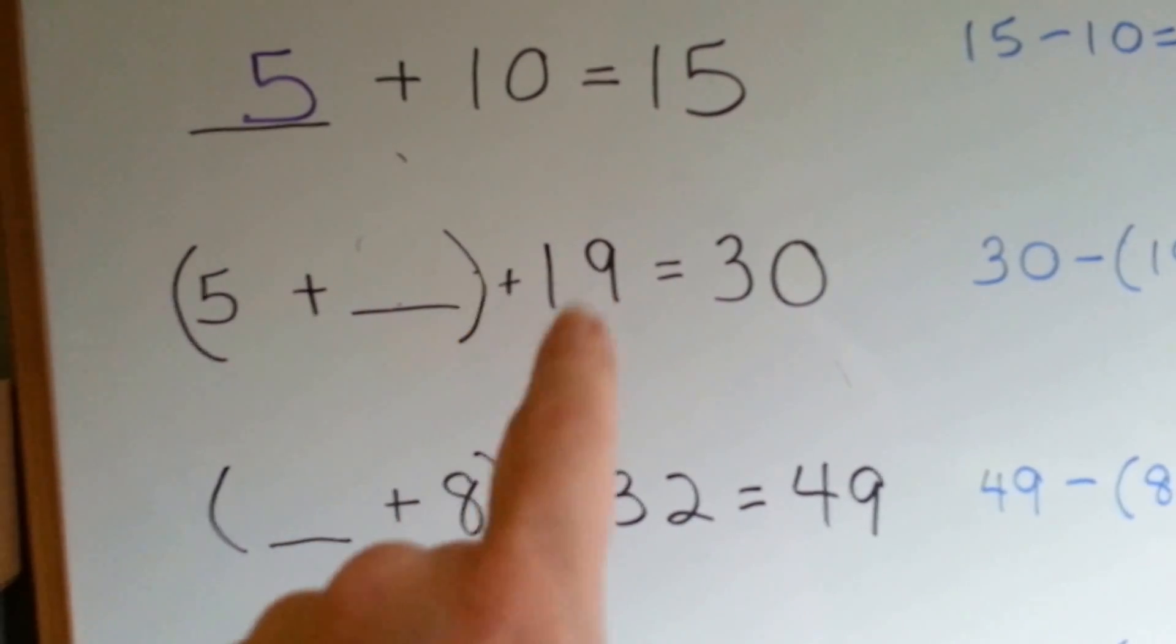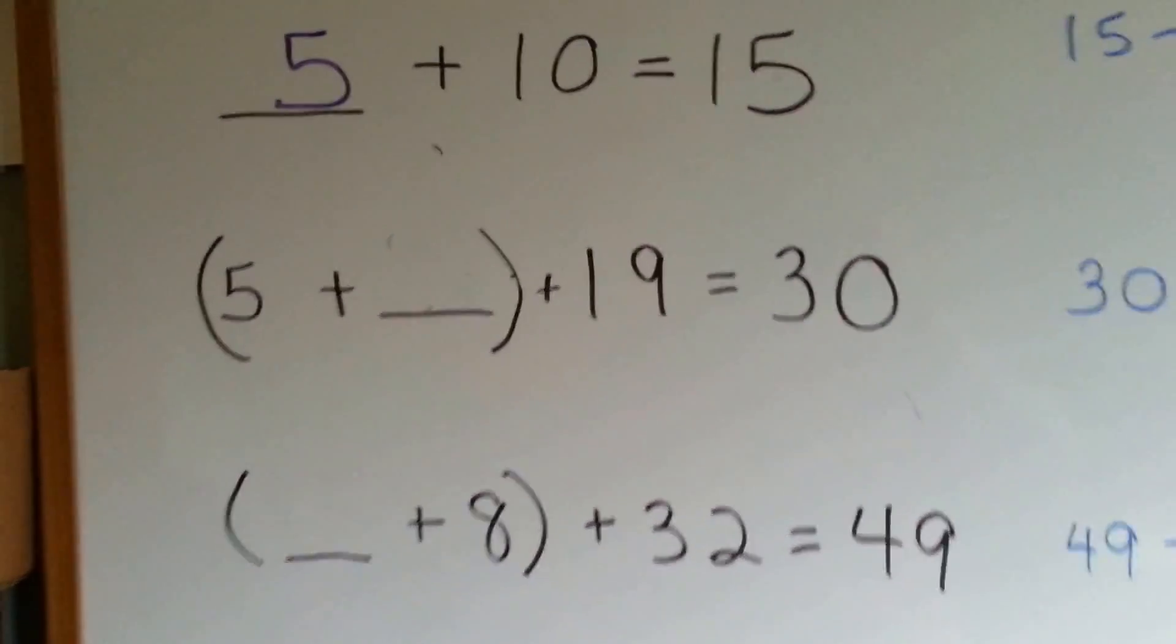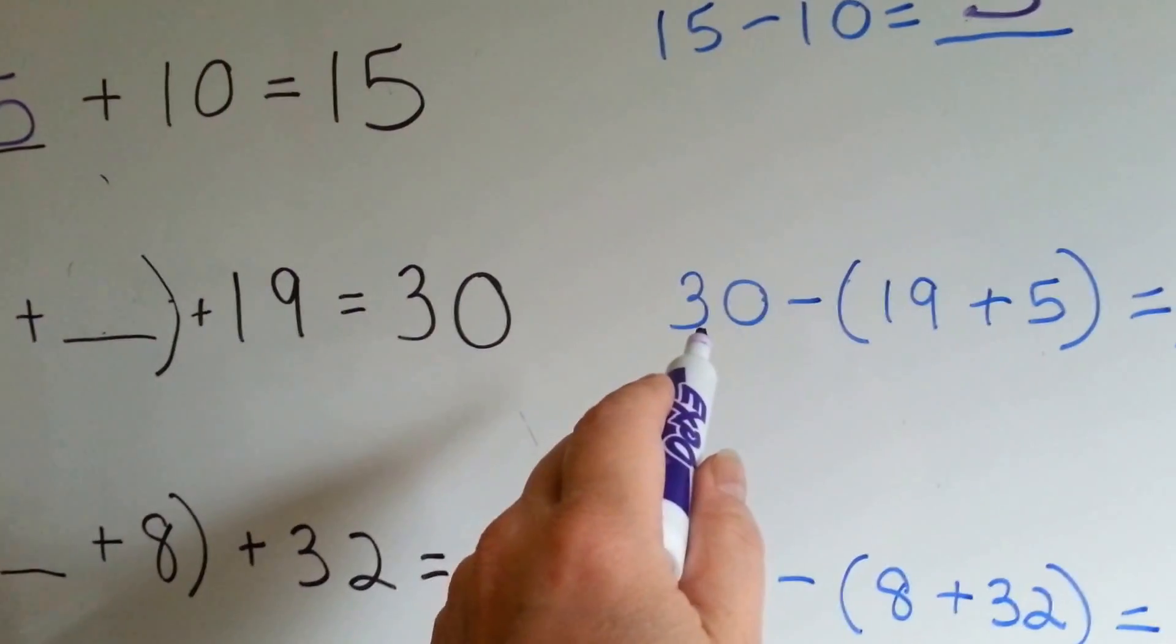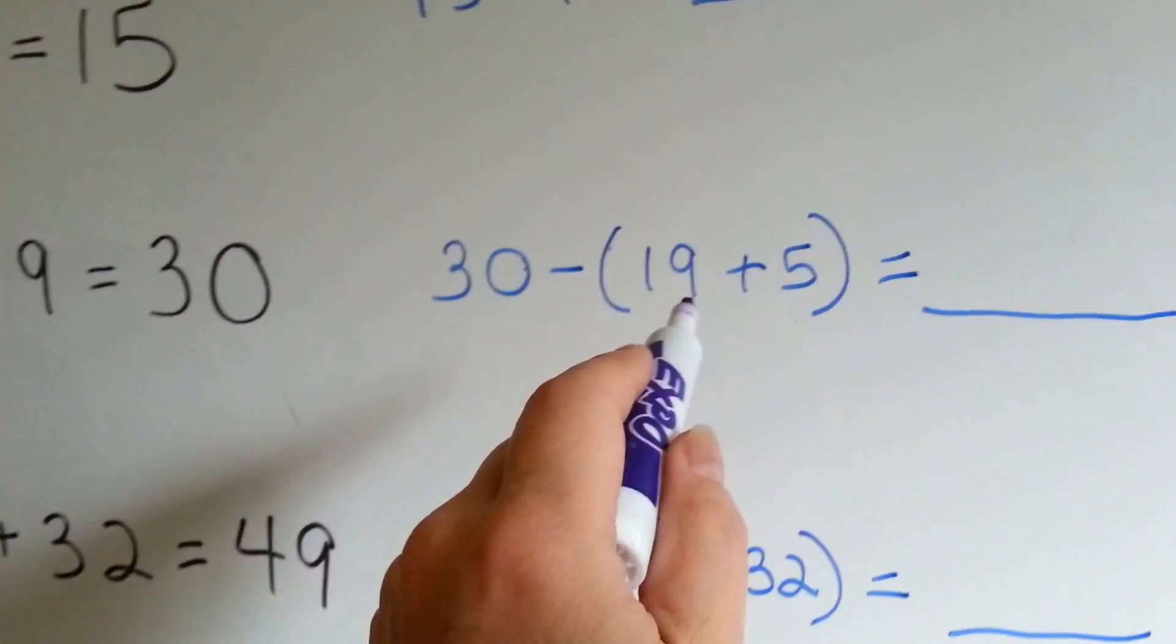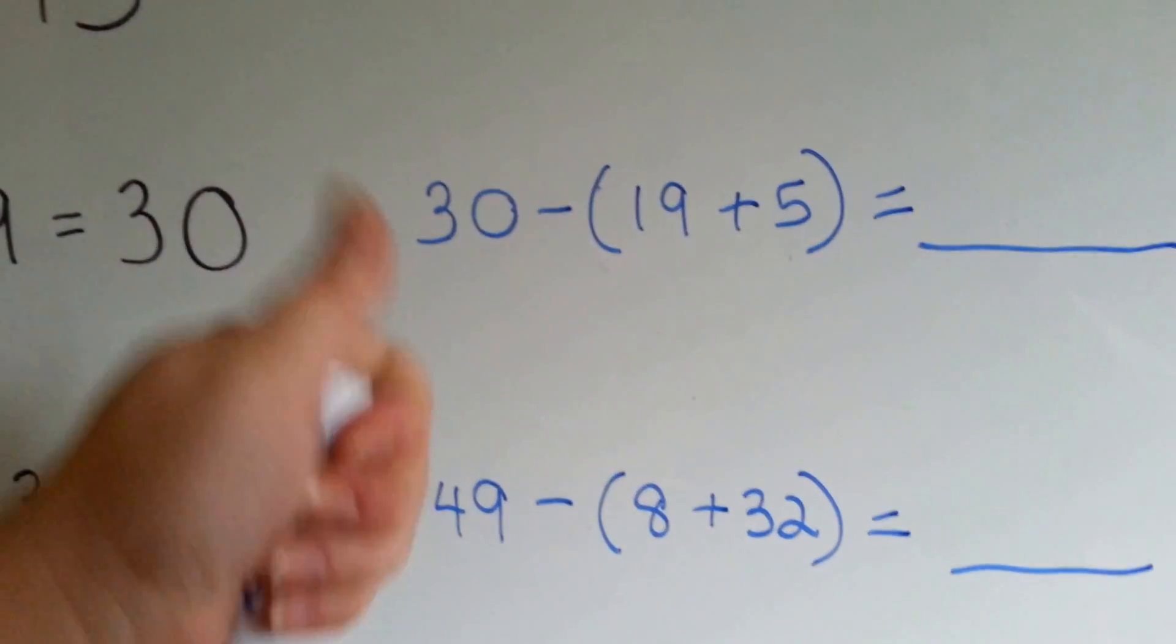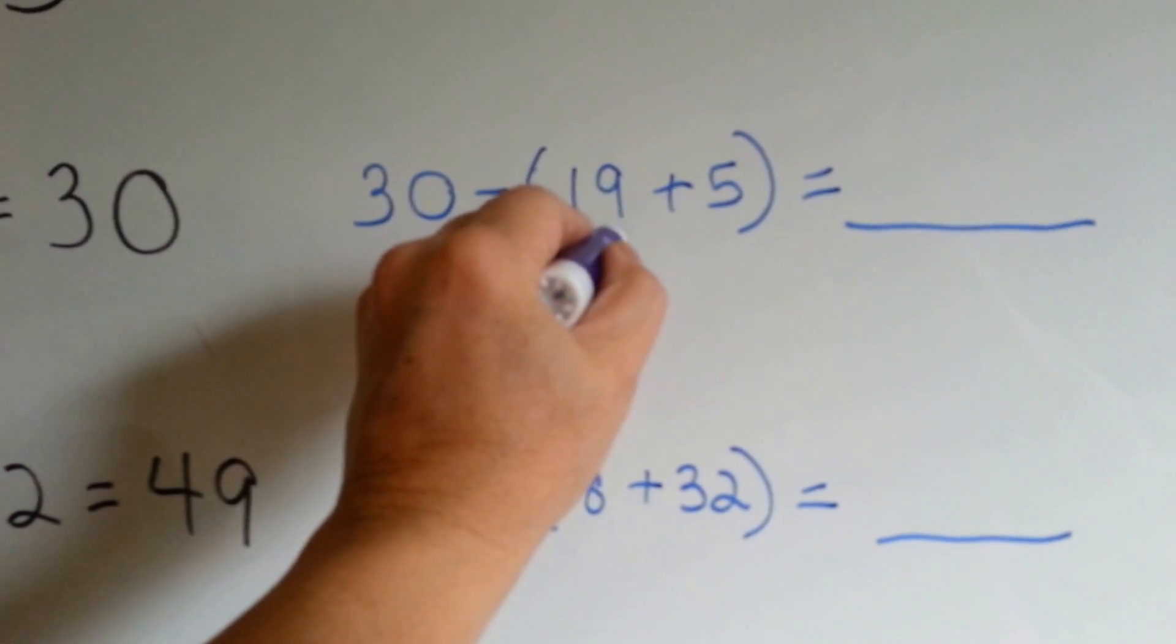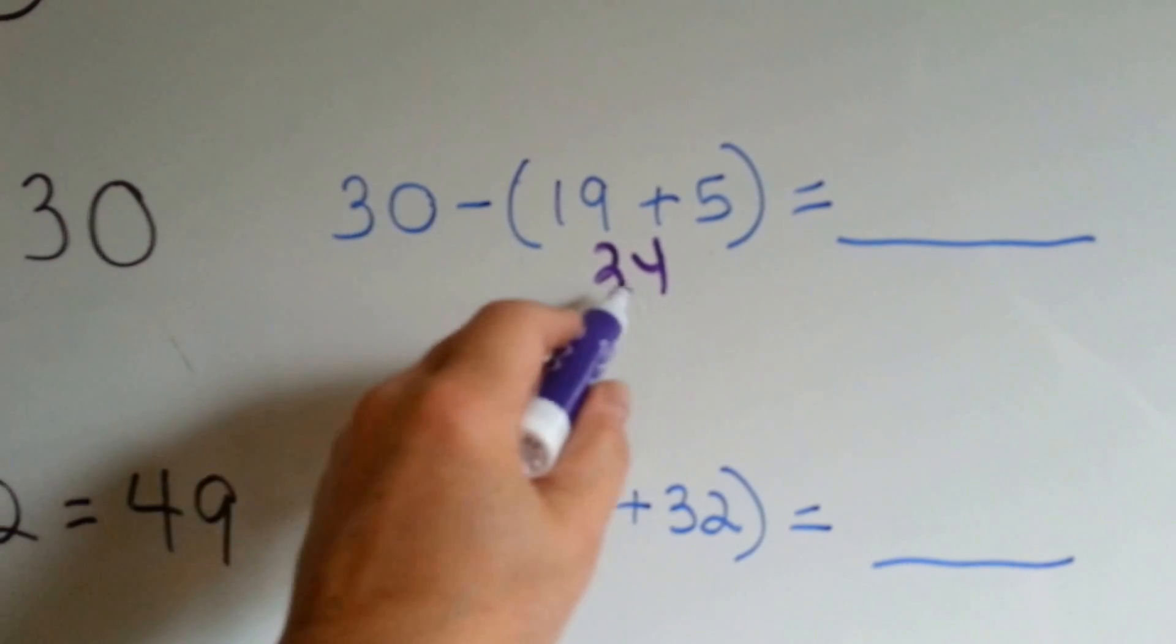5 plus blank plus 19 equals 30. How would we solve that one? Well, we're going to take 30 and we're going to subtract the 19 plus the 5. What is 19 plus 5? 19 plus 5 is 24. So now we say 30 take away 24.